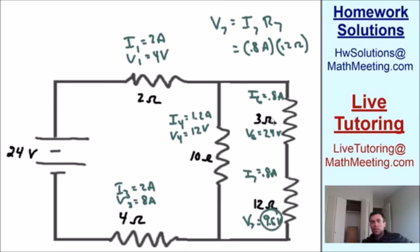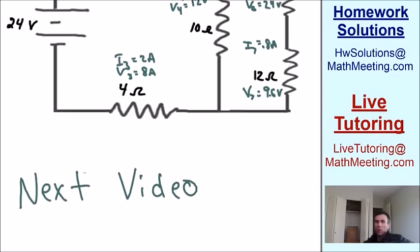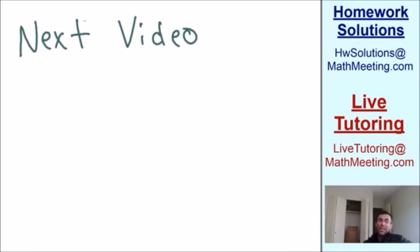We've now officially found the current through and the voltage across every single resistor in the original circuit. I hope this gave you a better understanding of circuit analysis. Check out my next video to keep learning, and thank you for watching — don't forget to subscribe!